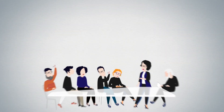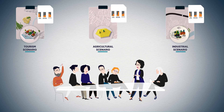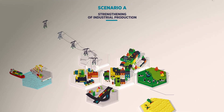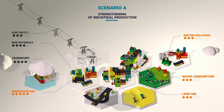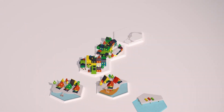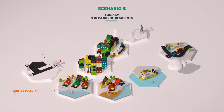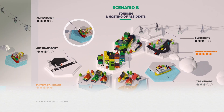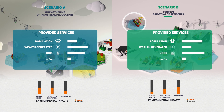On the basis of these territorial diagnoses, local stakeholders can then design and compare the environmental performance of different development scenarios. Let us take the example of two contrasting scenarios: one strengthens industrial production to support the local economy, while the other is more oriented towards tourism and hosting residents. The impacts of these scenarios are very different, but to compare them directly would be a mistake, as they do not provide the same basket of services.